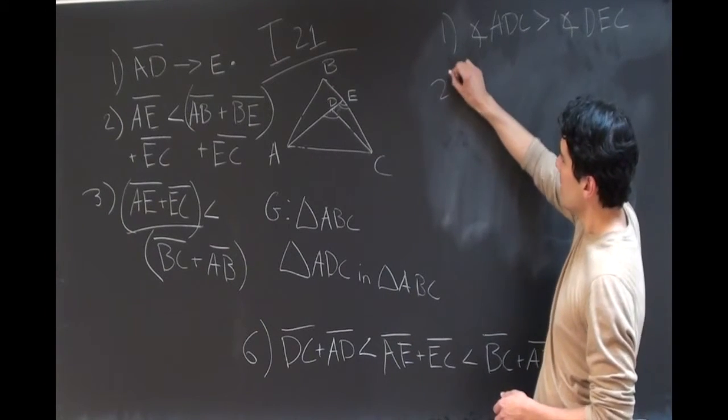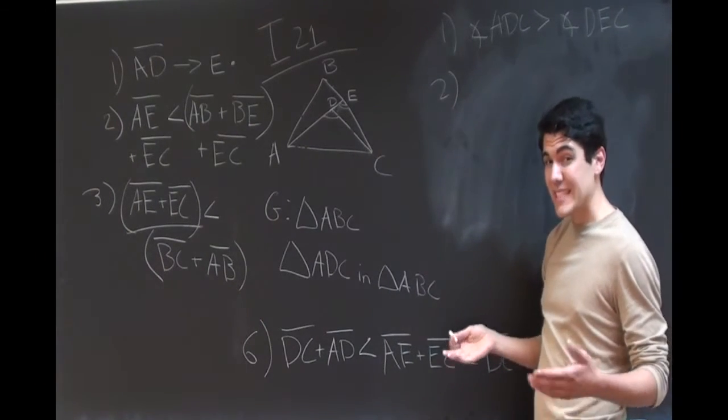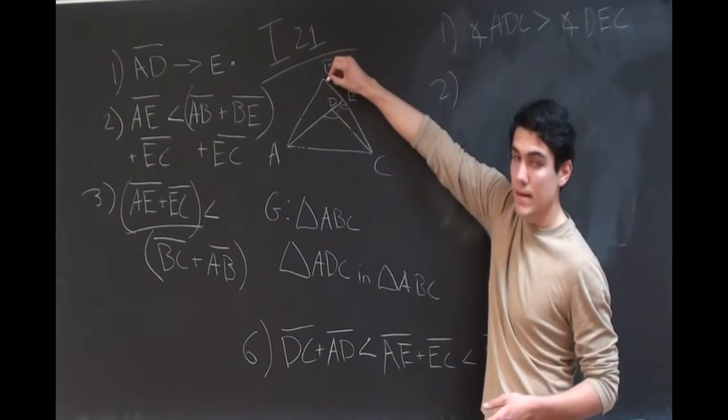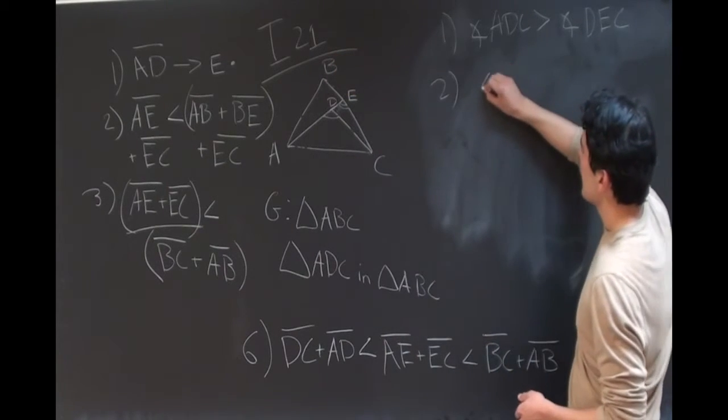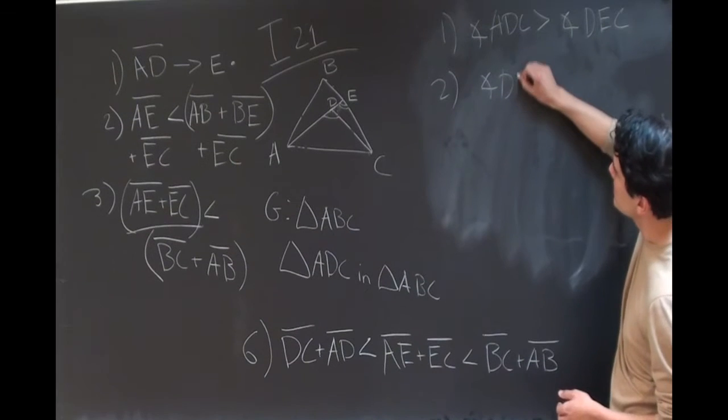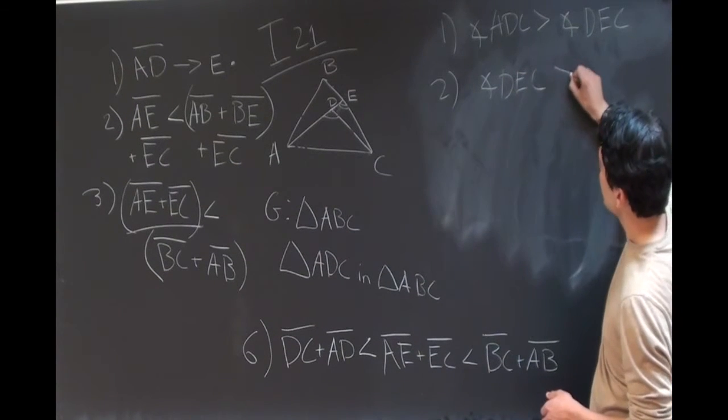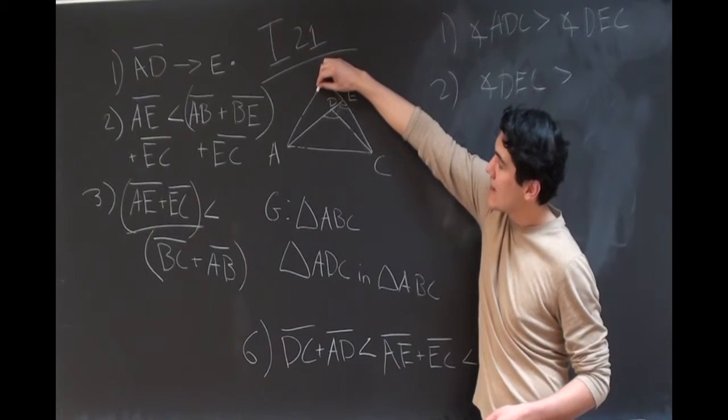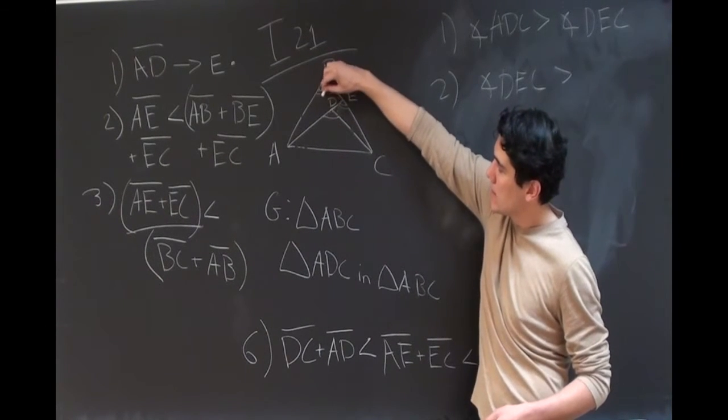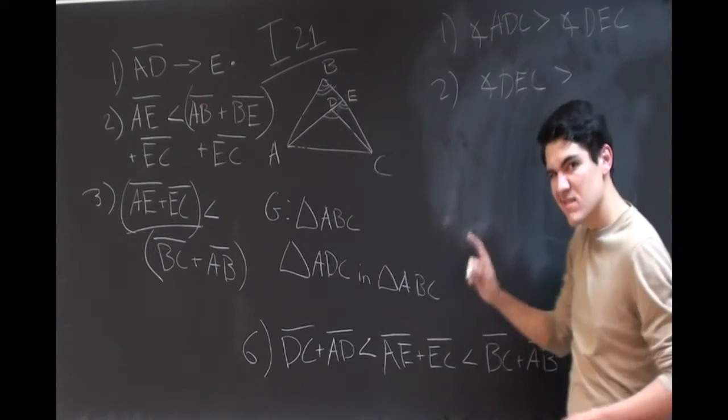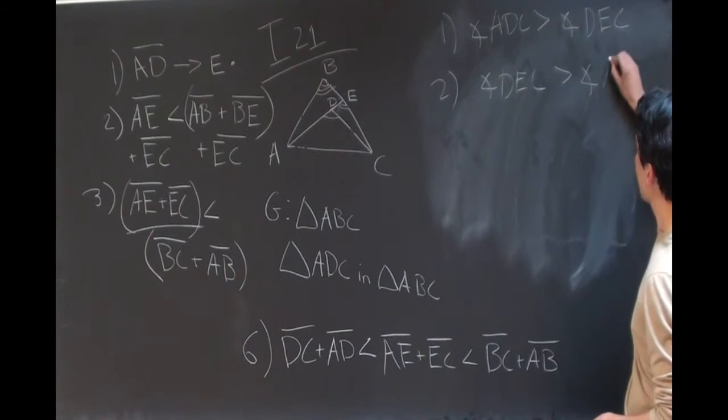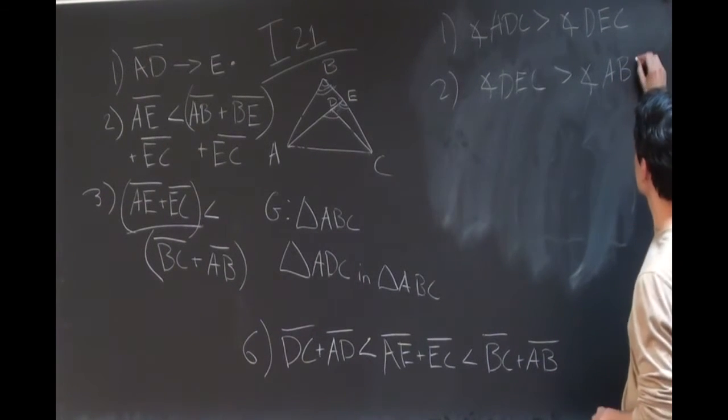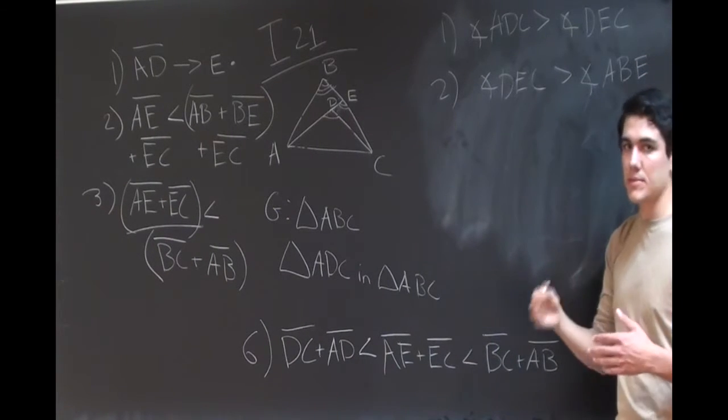All right. And so, but then we look at the angle DEC and we see that it's an exterior angle of the triangle AEB as well. So therefore, we can say that angle DEC is greater than its interior and opposite angle, namely, in this case, ABE, right here. That angle. Again, because of Proposition 16, exterior angles, it's greater than the interior and opposite angle.